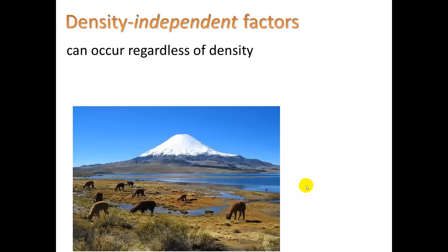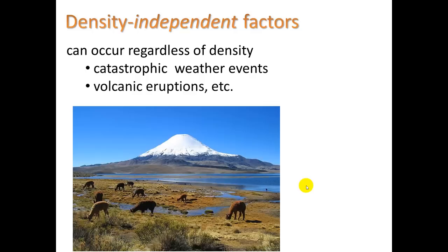There can also be density-independent factors, which occur regardless of density — for example, catastrophic weather events like hurricanes, major droughts, or volcanic eruptions. Here you see some animals in front of Paranacota volcano in Chile. If this volcano blew, it could affect this population, which has nothing to do with their density.